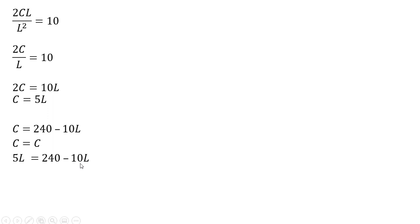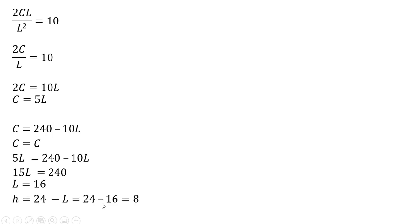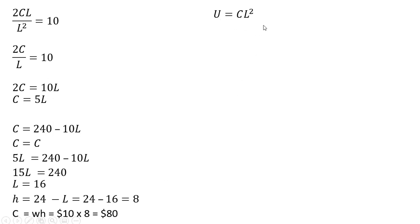We've got two C equations, so setting C equal to C — now we have one equation, one unknown. Adding 10L to both sides and dividing through by 15, the person will take 16 hours of leisure. Since there are 24 hours in a day, 24 minus 16 means the person works 8 hours. With 8 hours of work at $10 an hour, the person can buy $80 worth of consumption goods. Plugging 80 for C and 16 for L into the utility function, we solve for the person's level of utility.